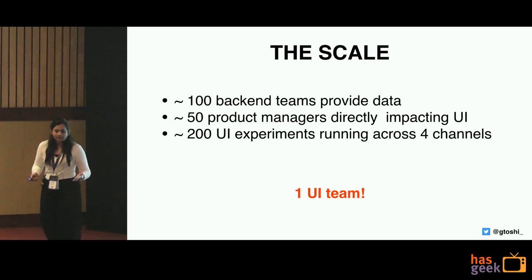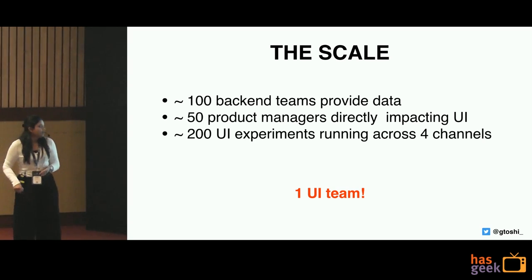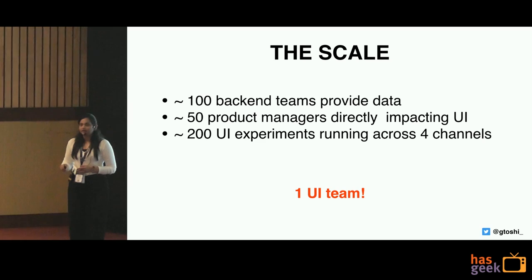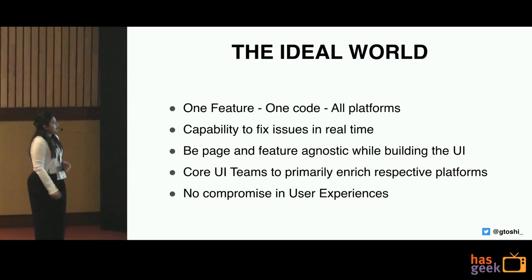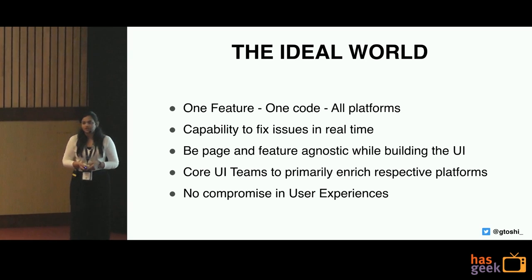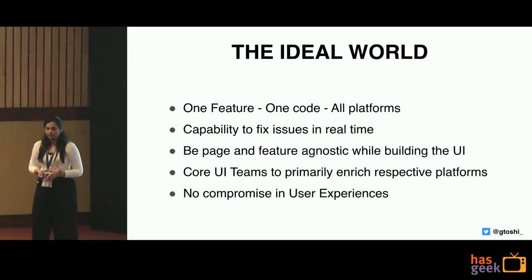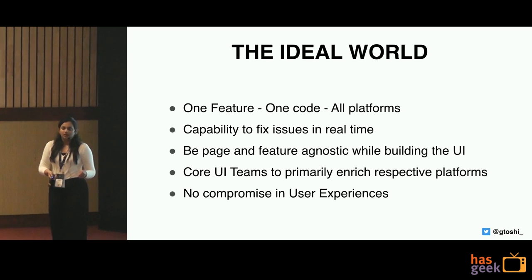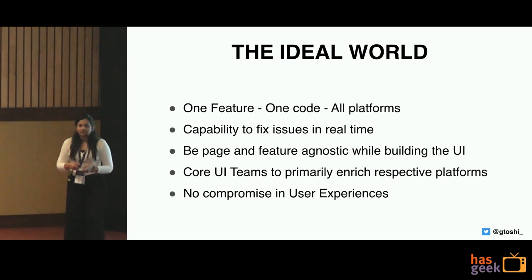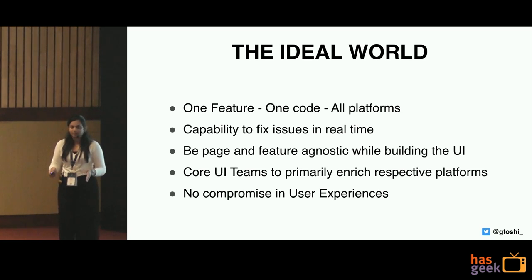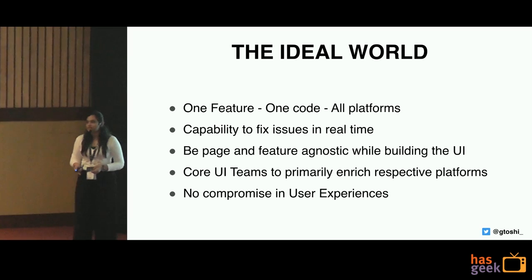That's the way we operate — we have one UI team which supports all these platforms and takes care of all these humongous changes. This needs optimization on our end. The ideal world we think should be applicable here: I should not write code multiple times across platforms with the same business logic. I should write once and render everywhere. Also, at times of high traffic — like Flipkart's Big Billion Days — we need a tech stack that helps us fix issues in real time without waiting for any app releases, whether Android or iOS.